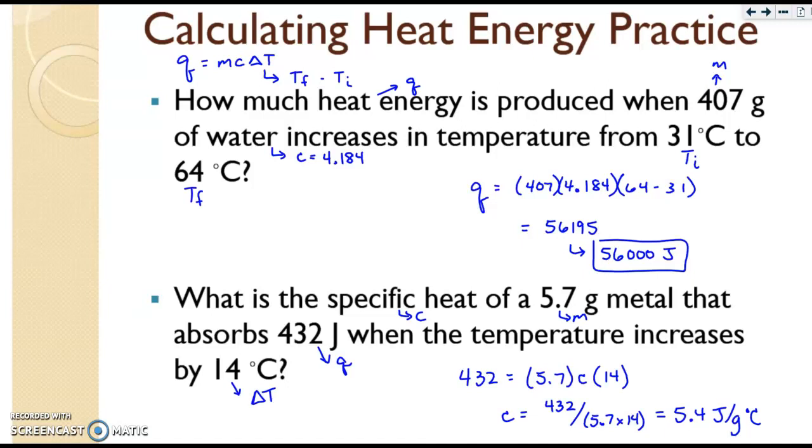Please check your answers to these practice problems. The first problem is just like the example from the previous video. You're looking for Q. You have the mass because it's water, specific heat is 4.184. And you find your change in temperature, which is always final minus initial. You should get right around 56,195, and then for sig figs you round down to 2, so it becomes 56,000 joules.